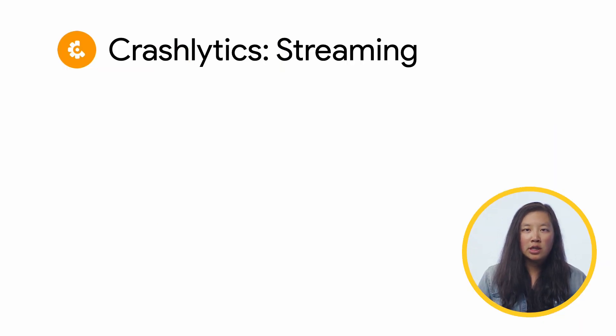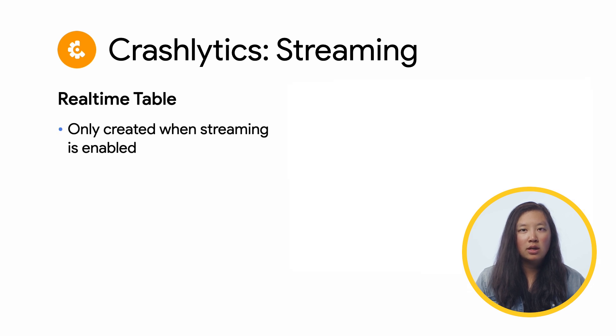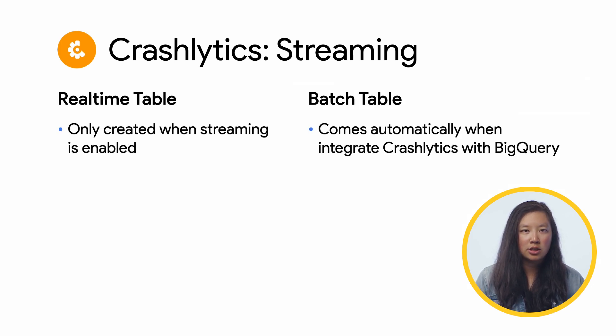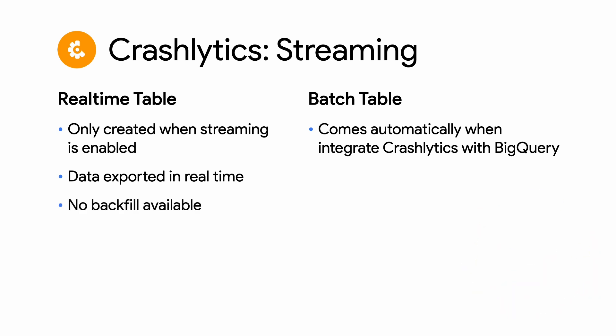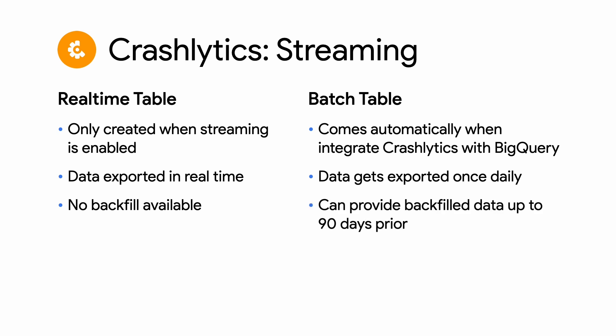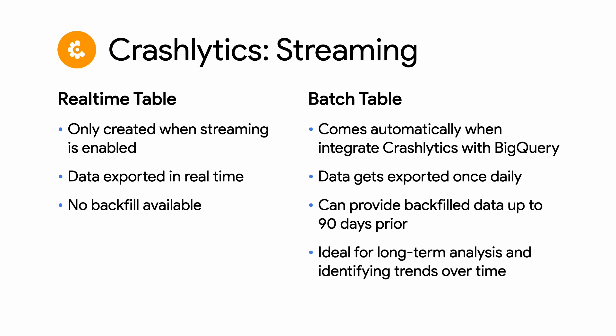You can also include streaming for Crashlytics, which will result in a real-time table in addition to the batch table you'd have for integrating Crashlytics with BigQuery. The real-time table will have data exported in real-time, but with no backfill available, whereas the batch table has data exported once daily and can provide backfill data up to 90 days prior. The batch table is ideal for long-term analysis and identifying trends over time, because Firebase durably stores events before writing them. When data gets written to your real-time table, the data gets immediately written to BigQuery and is ideal for live dashboards and custom alerts. These two tables can be combined with a stitching query to get the benefits of both.